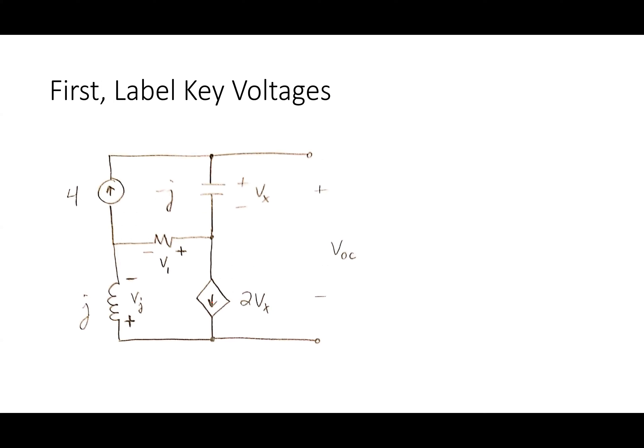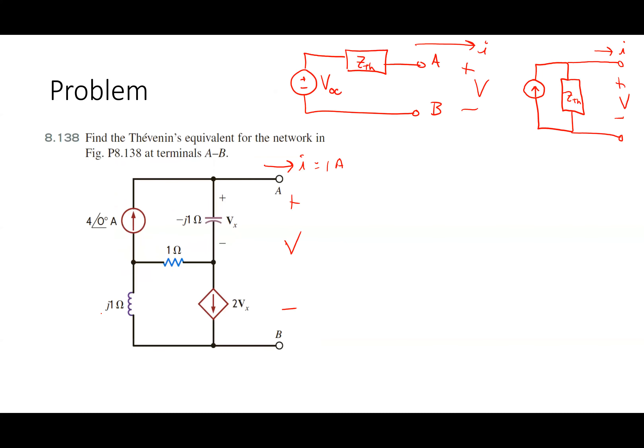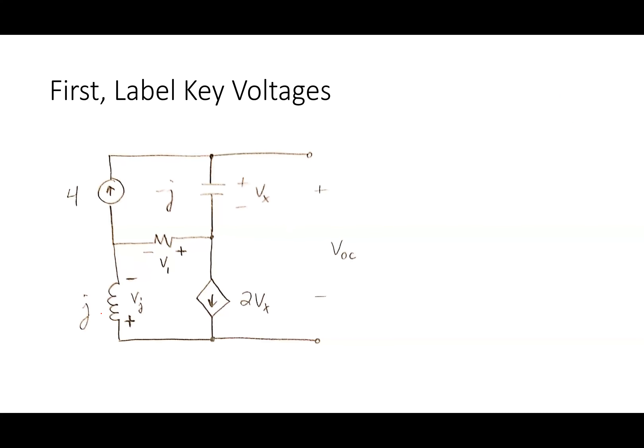I want to find Voc. The inductor has impedance j1 and the capacitor has impedance -j1, so the circuit is already in the phasor domain. Vx is labeled already. I called the voltage on the inductor Vj, the voltage across the resistor V1, and everything is one ohm. The approach here is mesh analysis.